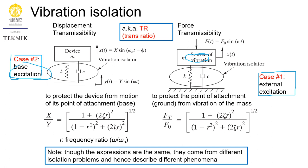Under both cases we are dealing with damping, because we are including the damper in the model. That is why we can get the relationship of X divided by Y, or F_T divided by F_naught. This is what we call the transmissibility ratio.